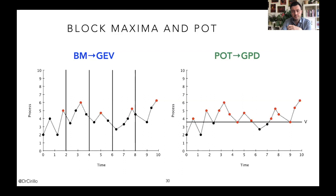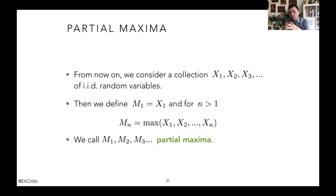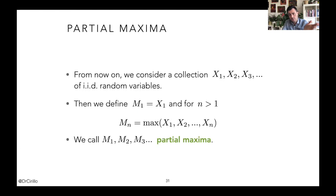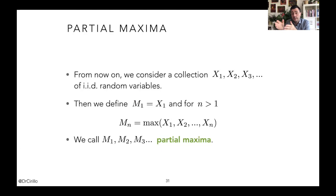The first thing to do rigorously in extreme value theory is to define what a maximum is for us. Mimicking the concept of a partial sum Sₙ, we introduce the partial maximum. We consider a sequence of x₁, x₂, x₃ as IID random variables. We define m₁ = x₁: if you have a data set with one observation, that observation is the minimum, maximum, mean, median — everything. For n > 1, we define mₙ as the maximum value among the first n observations.